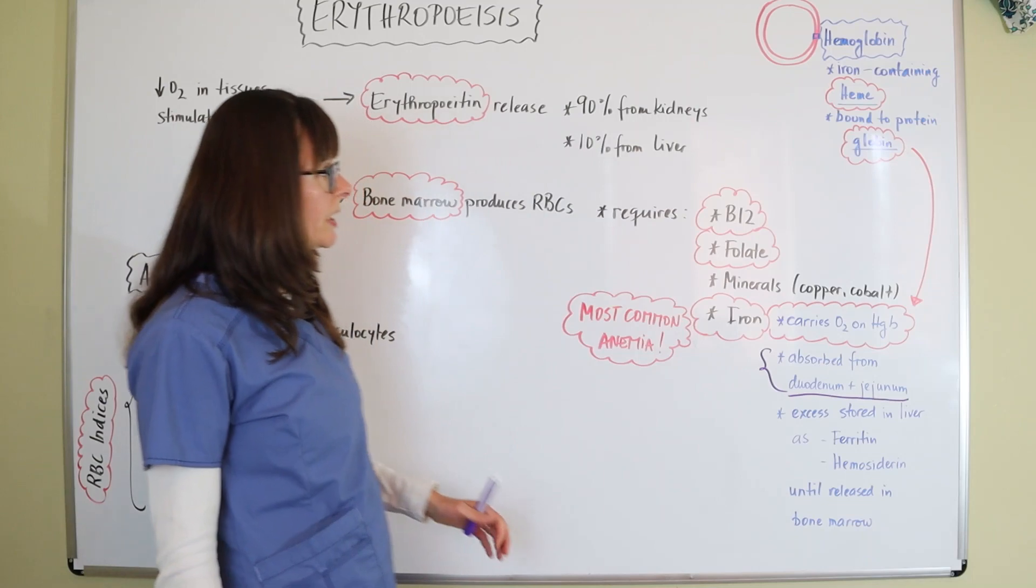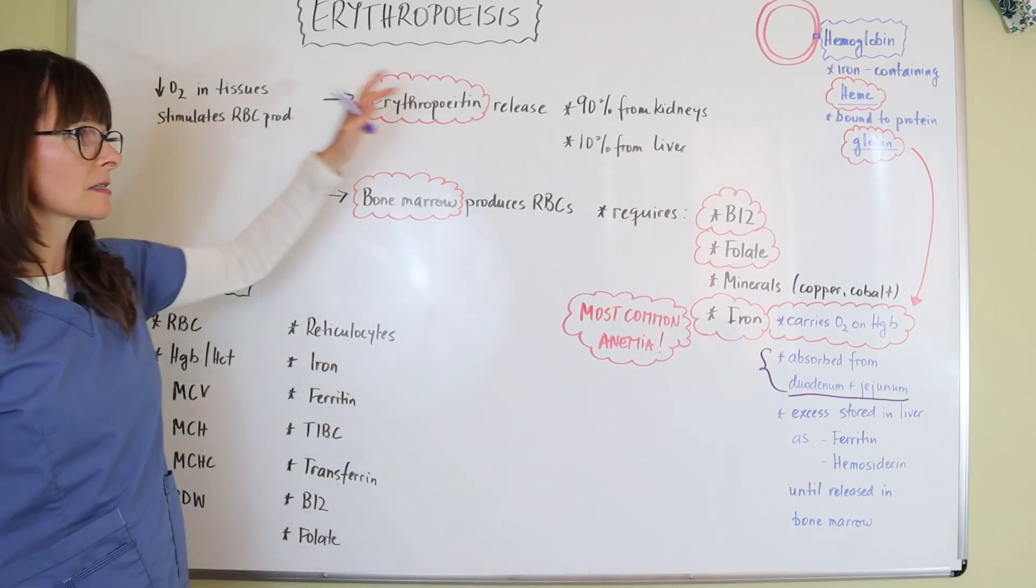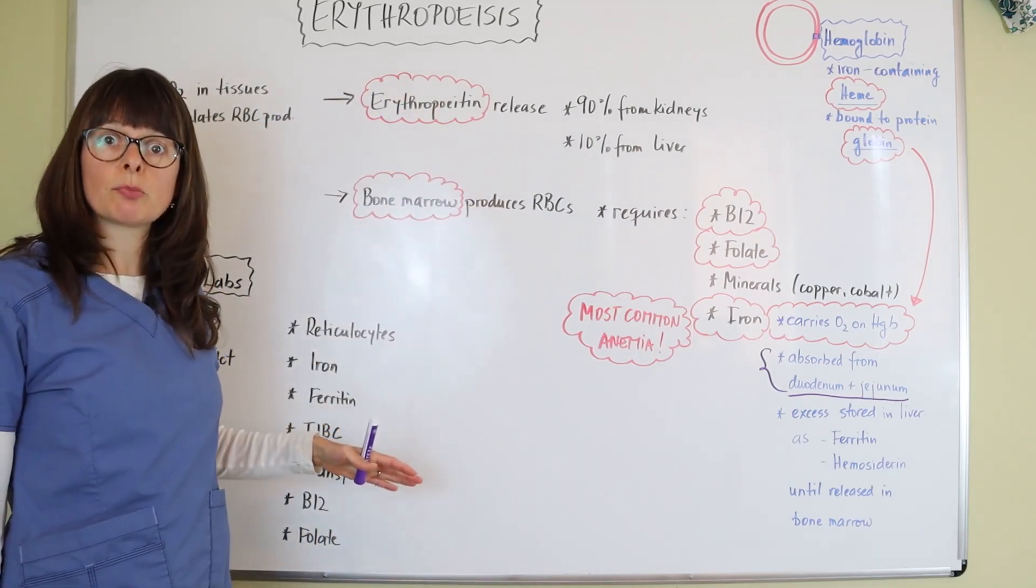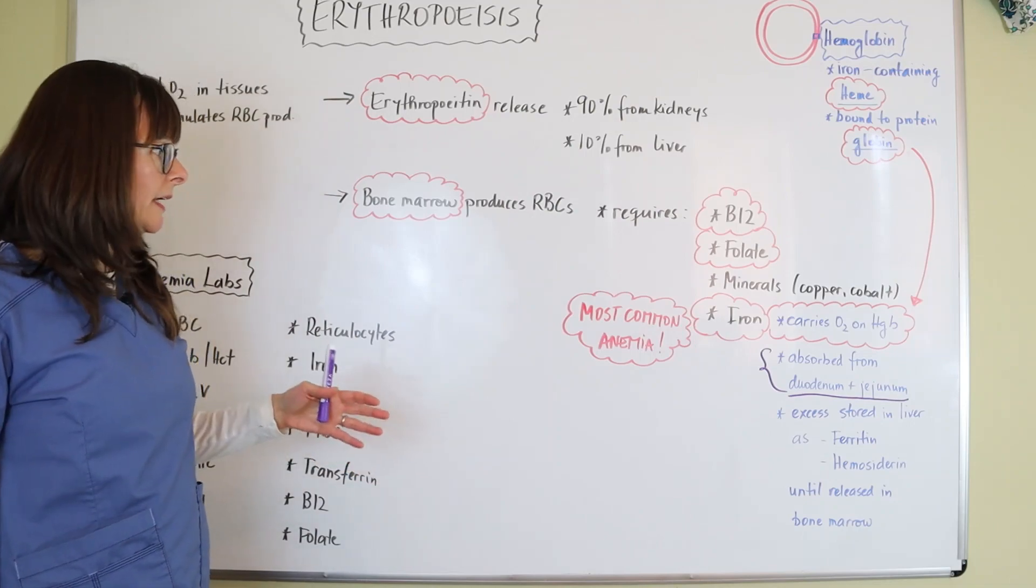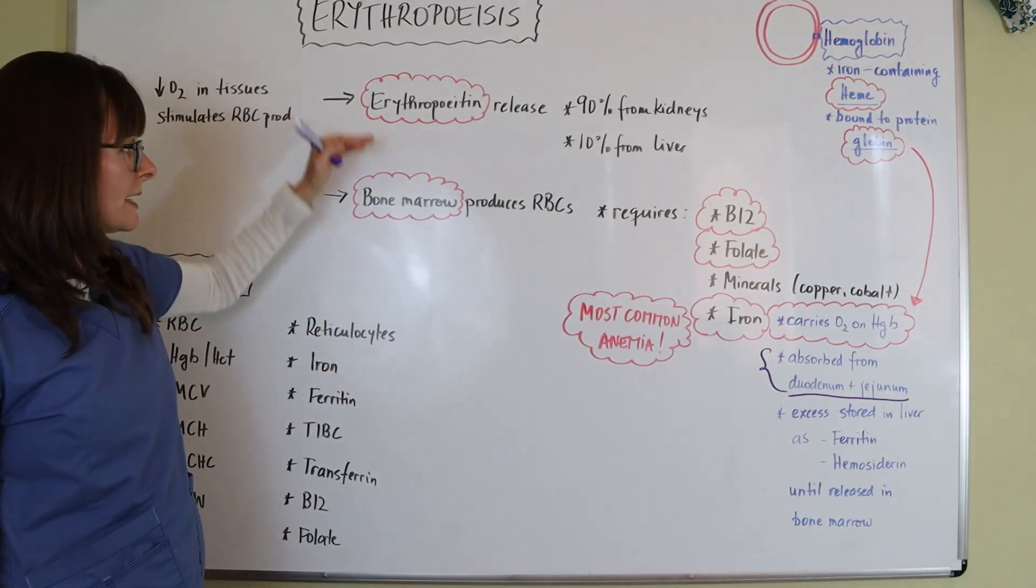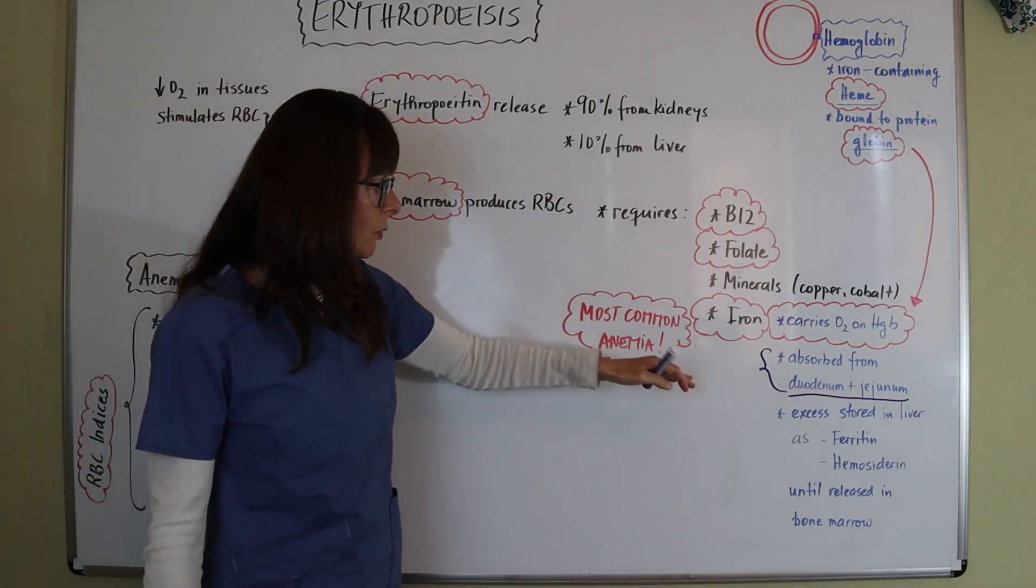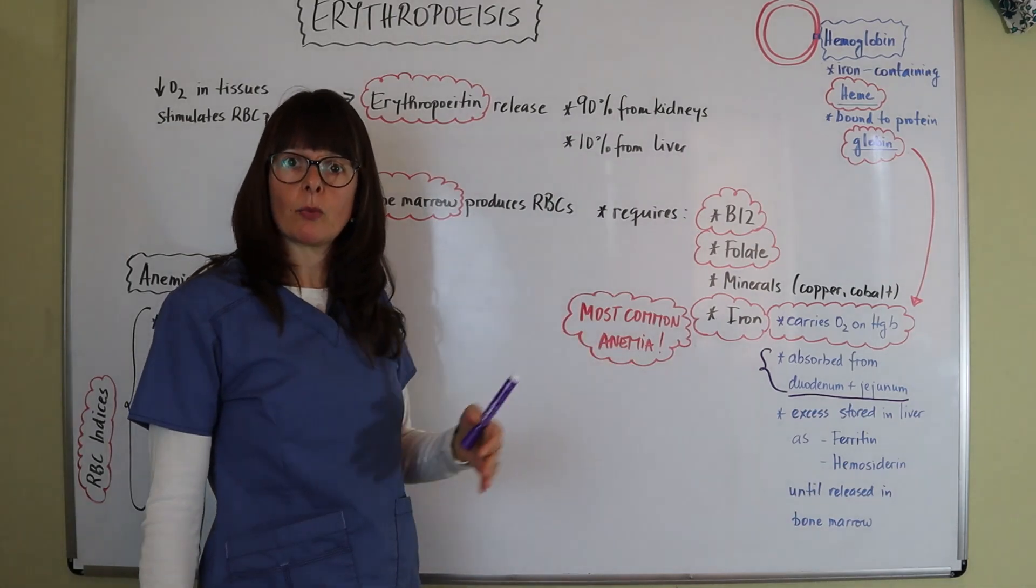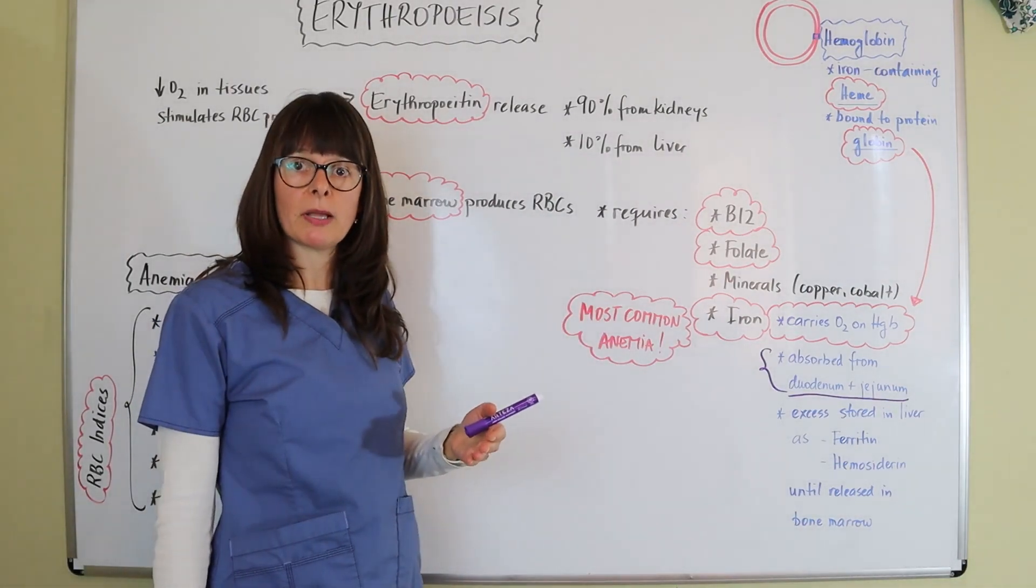And so once we understand what it takes for erythrocytes to be generated, then we know that if there's a breakdown at certain points here, we're going to have anemia, which is a low red blood cell count.